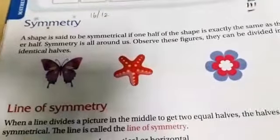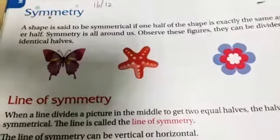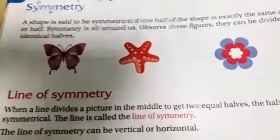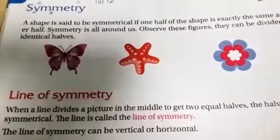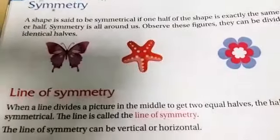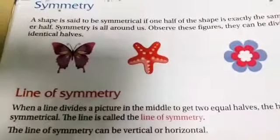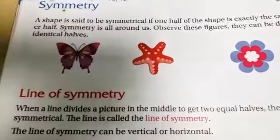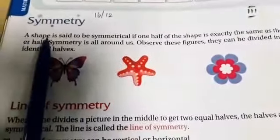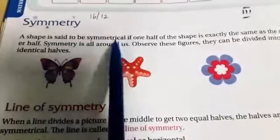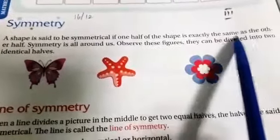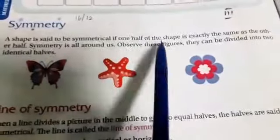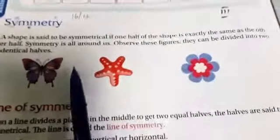Symmetry means the state of having two halves that match each other exactly — size, shapes, letters, etc. A shape is said to be symmetrical when one half of the shape is exactly the same as the other half.